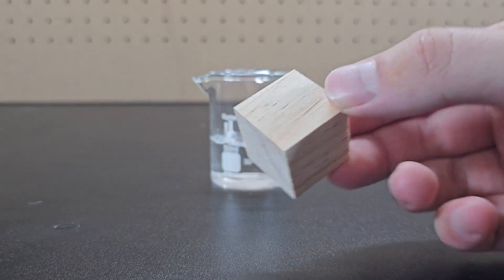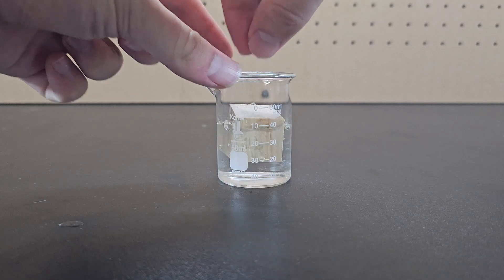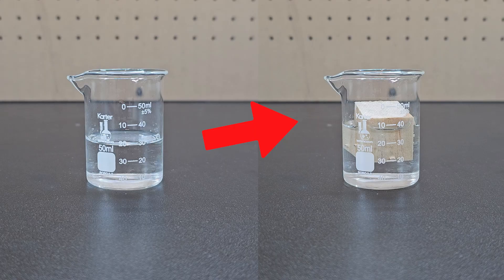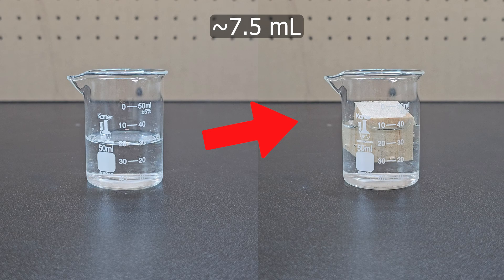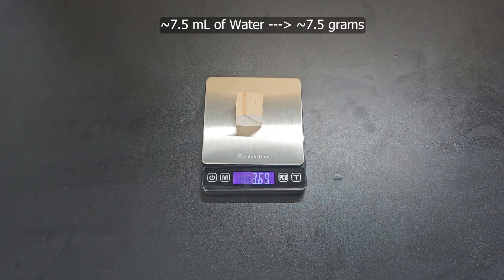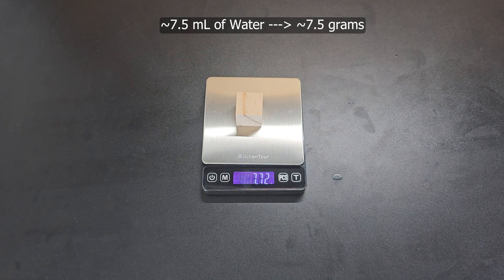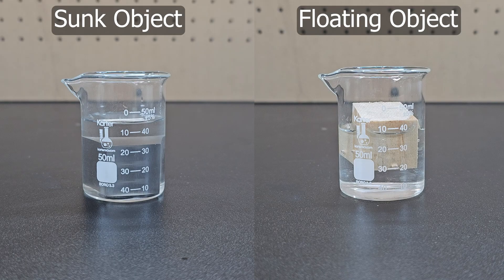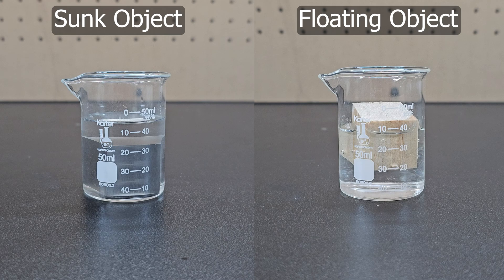Placing the same one inch cube, but this time wood, which is less dense than water, you'll see that it floats. Although the water level still rises, it only displaces about 7.5 milliliters of water. 7.5 milliliters of water weighs 7.5 grams, which is around the weight of this wood block. This shows a critical difference between floating objects and sunk objects.